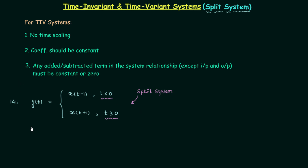Starting with condition 1: we check for any time scaling on the input side and on the output side. On the output side we only have t, so there is no time scaling. On the input side we have t−1 and t+1 — that is time shifting, not time scaling. So condition 1 is satisfied. For condition 2, the coefficients should be constant. There are two coefficients, one for each piece, and they are constant — not functions of time. So condition 2 is also satisfied.